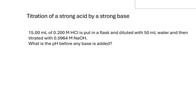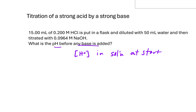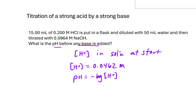Maybe we want to determine the pH before any base is added — the beginning of the titration curve. The only thing that matters is the concentration of H+ in solution. We already determined using the dilution equation that the concentration of H+ equals 0.0462 mol/L. From that, pH = −log[H+] = −log(0.0462), giving a pH of 1.33.